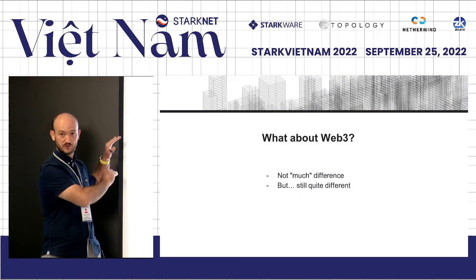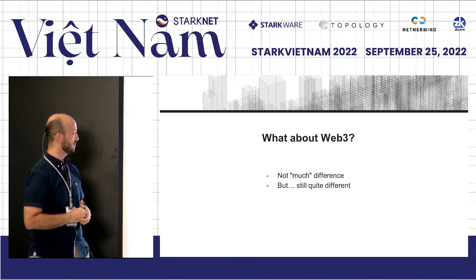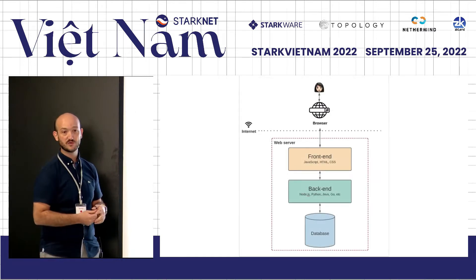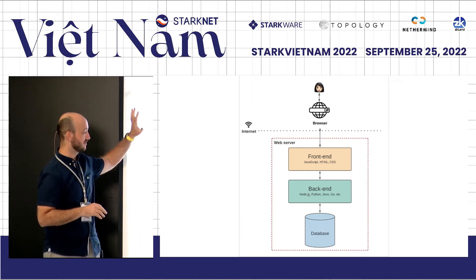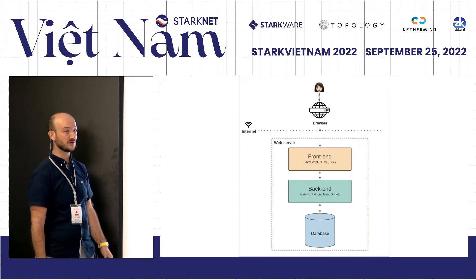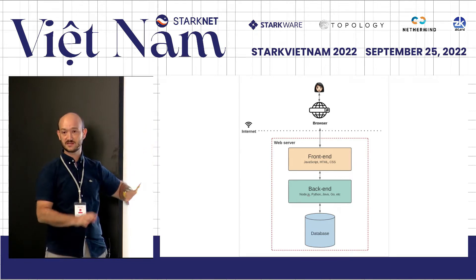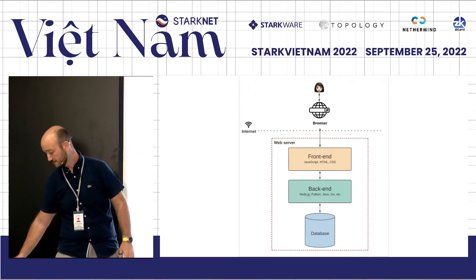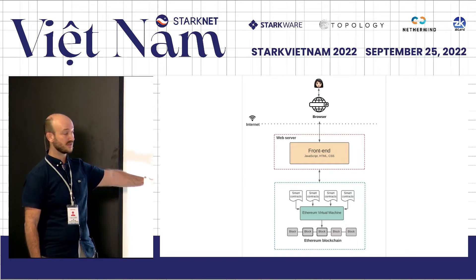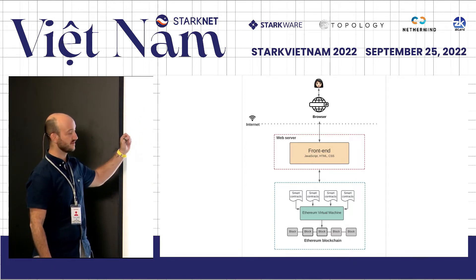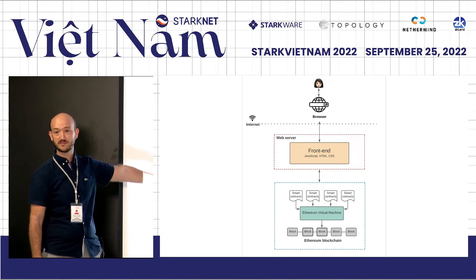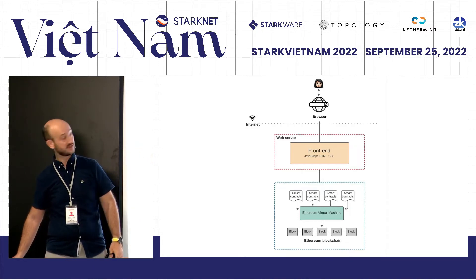So what about Web3? This was the Web2 picture. Not too different, but still quite different from a business perspective. That's roughly how you build a Web2 sort of product. You have the browser — that assumes a web product, but it's almost the same for mobile or even desktop. You have your front end, your back end, your database. Of course you have a lot of side services, but that's roughly it. You replace the back end by say an EVM or whatever it is — you replace the back end by Ethereum. But it's actually not that simple, right? It's actually more like this.